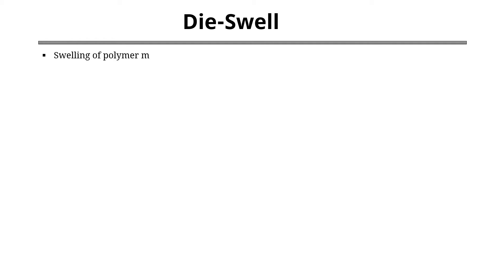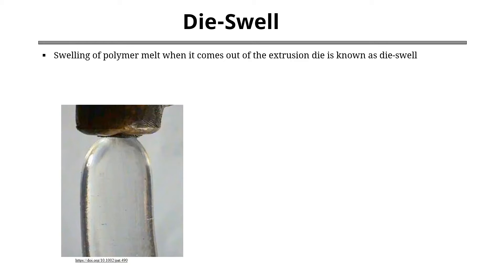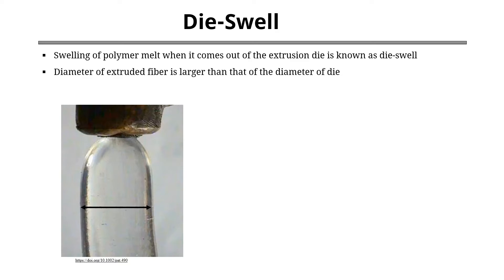Polymer swell is a common phenomenon in the polymer extrusion process. In extrusion, when polymer melt comes out from the die orifice, it expands — or in simple words, it swells. Due to swelling, the diameter of the extruded fiber is larger than the diameter of the die.